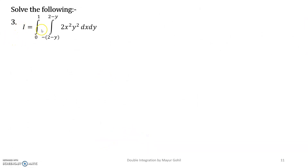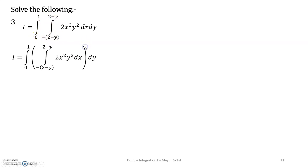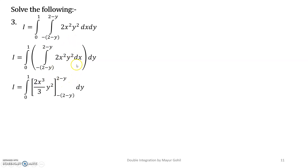The third example is: i equals the double integral of 2x²y² dx dy, with x limits from −(2 − y) to (2 − y) and y limits from 0 to 1. We put the innermost integral and innermost differential in the bracket. x is the variable of integration.